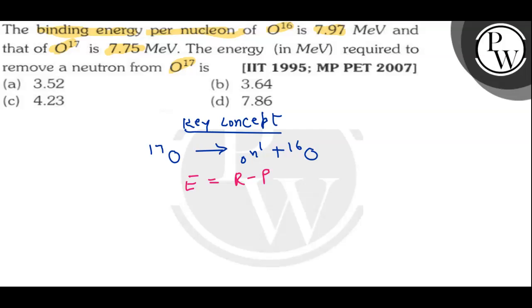What is the reactant energy? 17 into the energy given of O-17, that is 7.75.